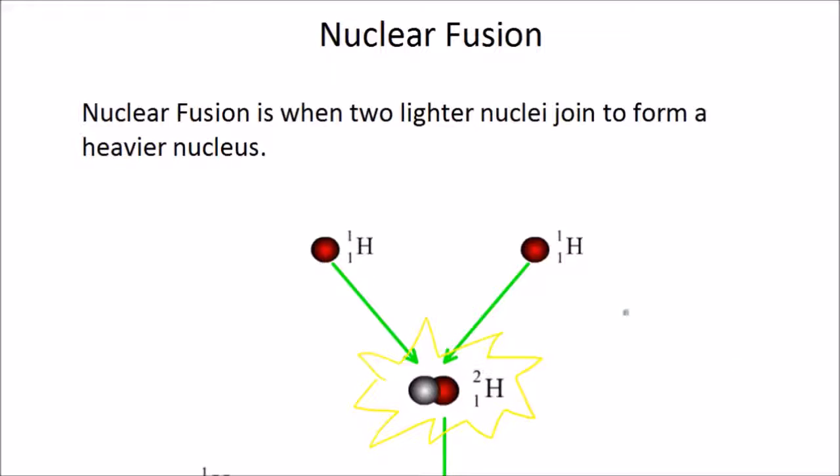So for example, hydrogen can fuse to form heavy hydrogen. So these two hydrogen nuclei can fuse to form what's called a heavy hydrogen nucleus. And in the process it releases lots of energy.